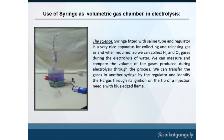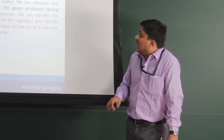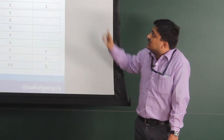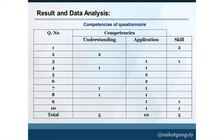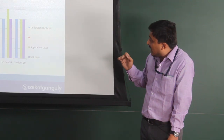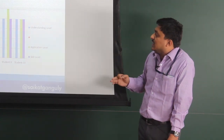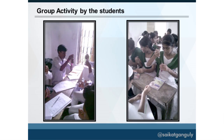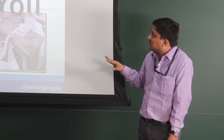This shows a syringe used for collecting gas from electrolysis. Regarding results: the questionnaire has 20 questions worth 10 marks, and knowledge-based questions are consciously avoided. After post-assessment, we find that application, understanding, and skill levels increase for each of the 50 students in the group. This is the group activity of my students. Thank you.